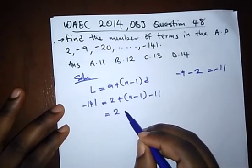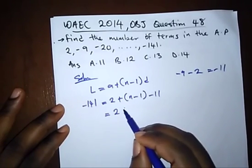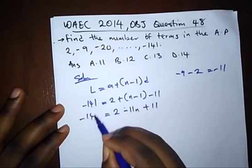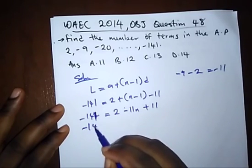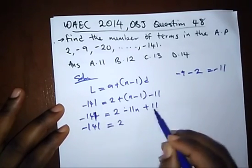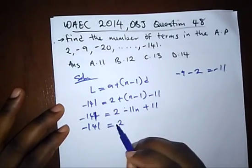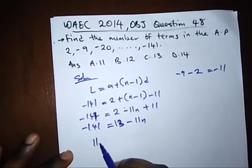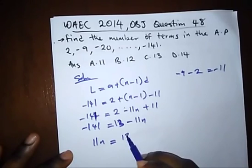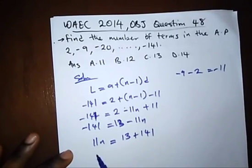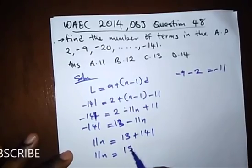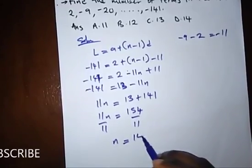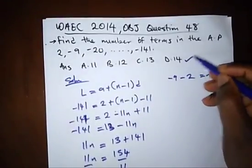Opening the bracket we have -11n + 11. So -141 = 2 + (-11n + 11), which gives -141 = 13 - 11n. Rearranging: 11n = 13 + 141, so 11n = 154. Dividing both sides by 11, we get n = 14. So our correct answer is option D.